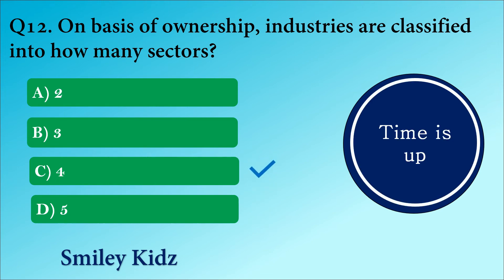The right answer is option C. 4. On the basis of ownership, industries are classified into 4 sectors.